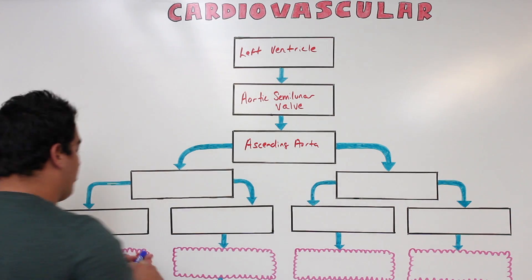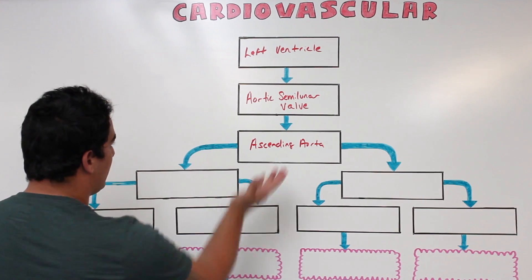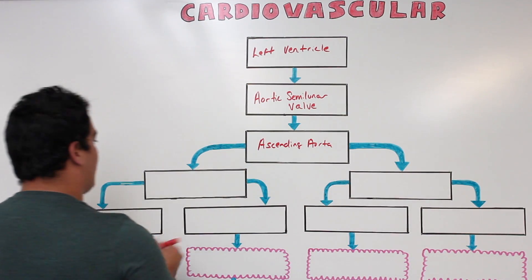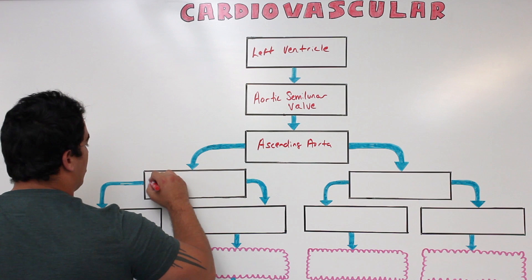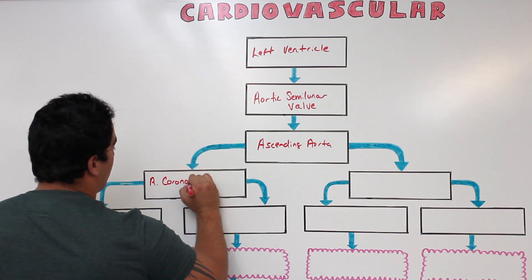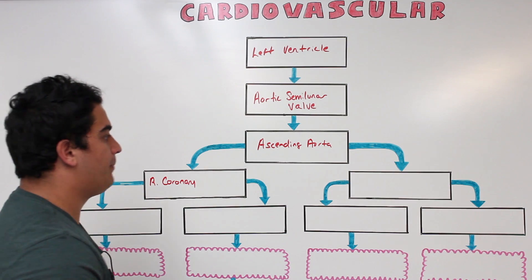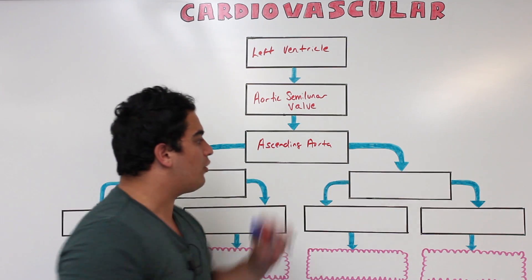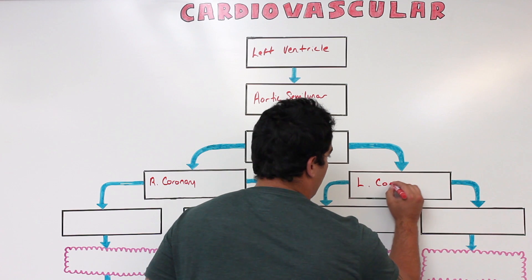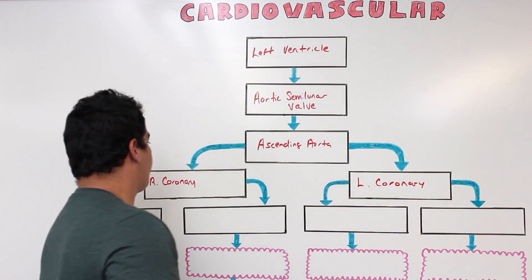The ascending aorta pumps blood into two different coronary vessels. On the right side is the right coronary artery, and on the other side is the left coronary artery.